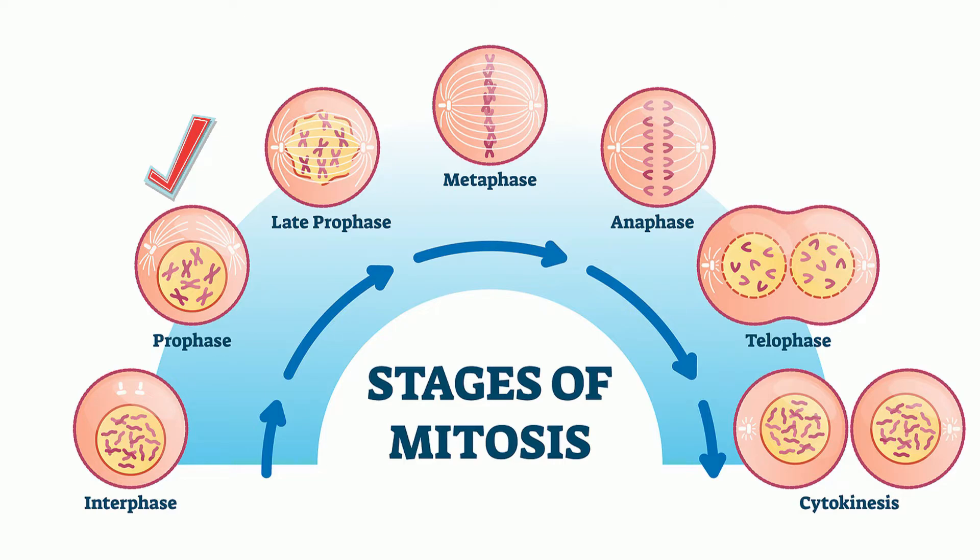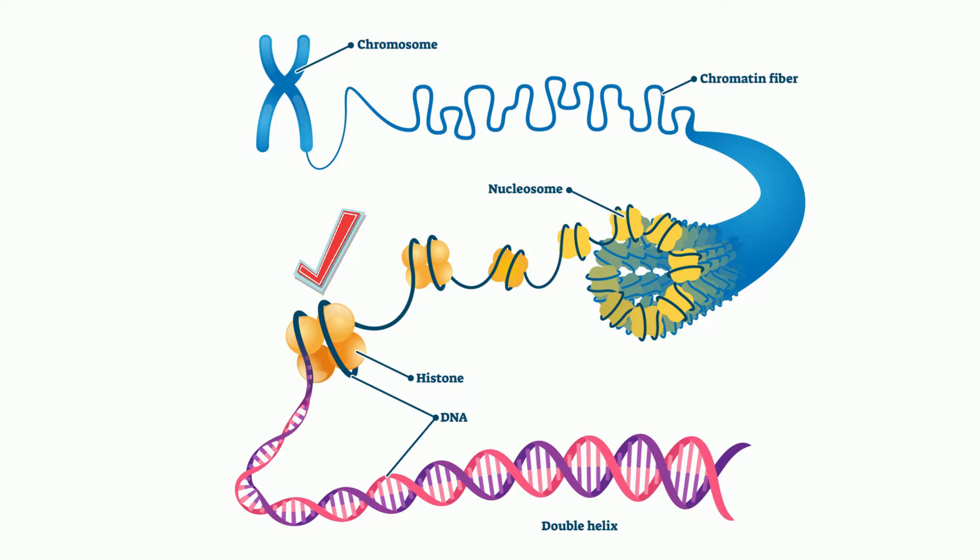The DNA begins to coil around histone proteins. The DNA twists and coils itself and creates a chromosome, which looks kind of like an X.